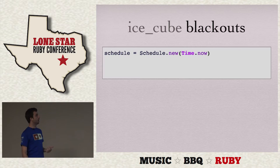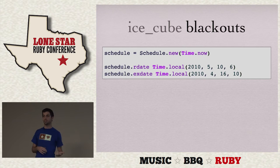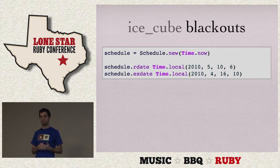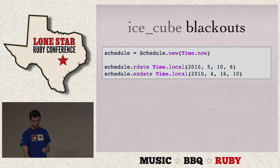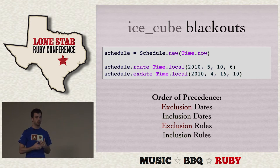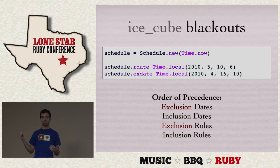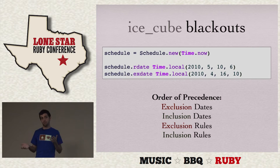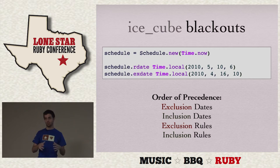You can also have blackouts on your schedules. You can add rdates and xdates — exactly what they sound like. An rdate is a single occurrence that has to happen. An xdate is a single occurrence that can't happen. The order of precedence — which is directly out of iCalendar — basically says that if you say there shouldn't be a date, there definitely shouldn't. Then if you say there should be a date, there definitely should. Then exception rules take precedence over recurrence rules.